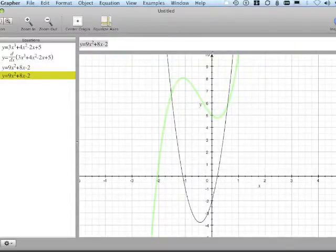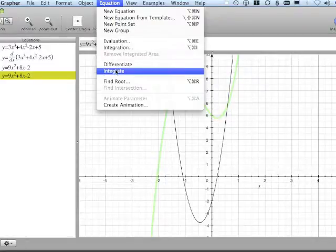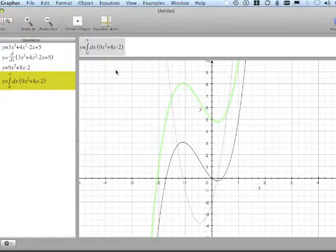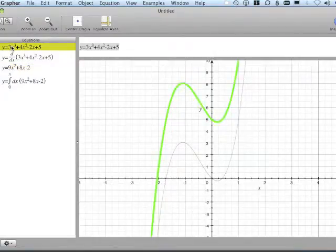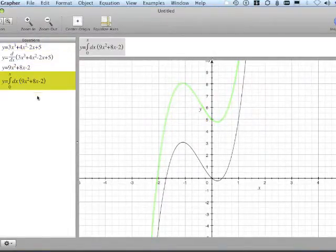This second equation I'm going to select, and I'm going to say equation in my dropdown, integrate. And of course, there's our original in green, and of course we lost the constant on the back end of it.